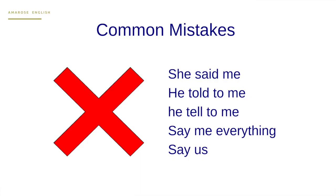Let's look at the common mistakes that I hear when teaching English to Spanish speakers. The first is 'she said me' — that's wrong, because you need to say 'she said to me', just like in Spanish: decir algo a alguien. So always say: she said to me, he said to me, they said to me. Another common mistake is 'he told to me' — also wrong. In this case we remove 'to' and say 'he told me'.